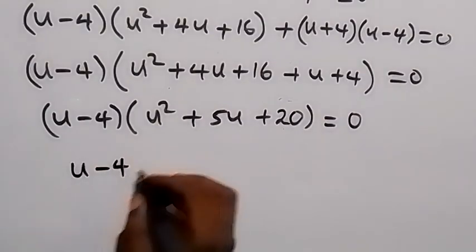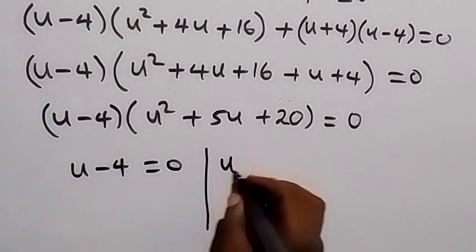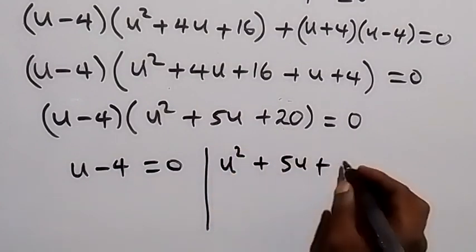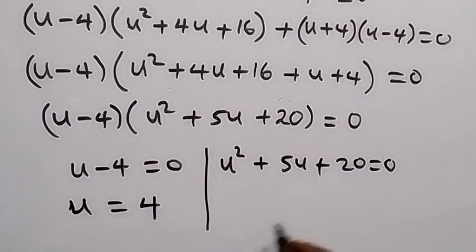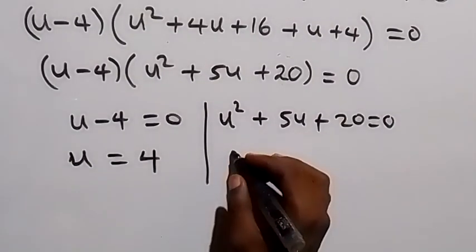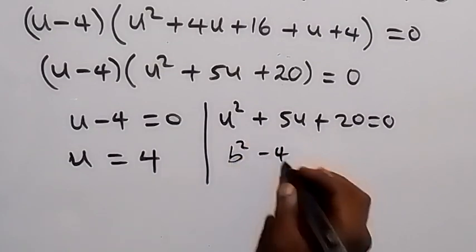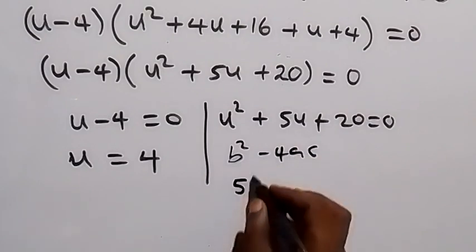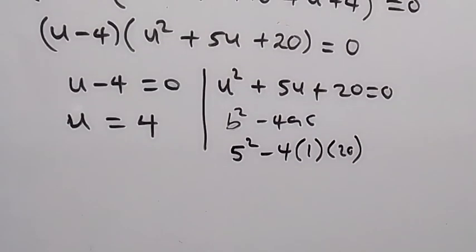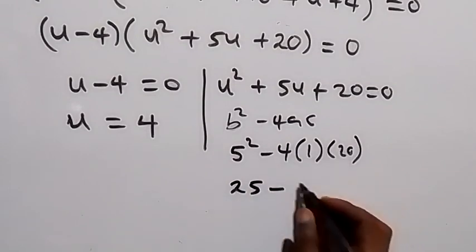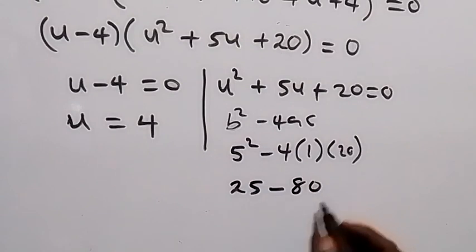From here we have two cases: u minus 4 equals zero, or u squared plus 5u plus 20 equals zero. For the first case, u equals 4. For the quadratic, we check the discriminant: b² minus 4ac equals 5² minus 4 times 1 times 20, which is 25 minus 80, giving minus 55, which is less than zero.